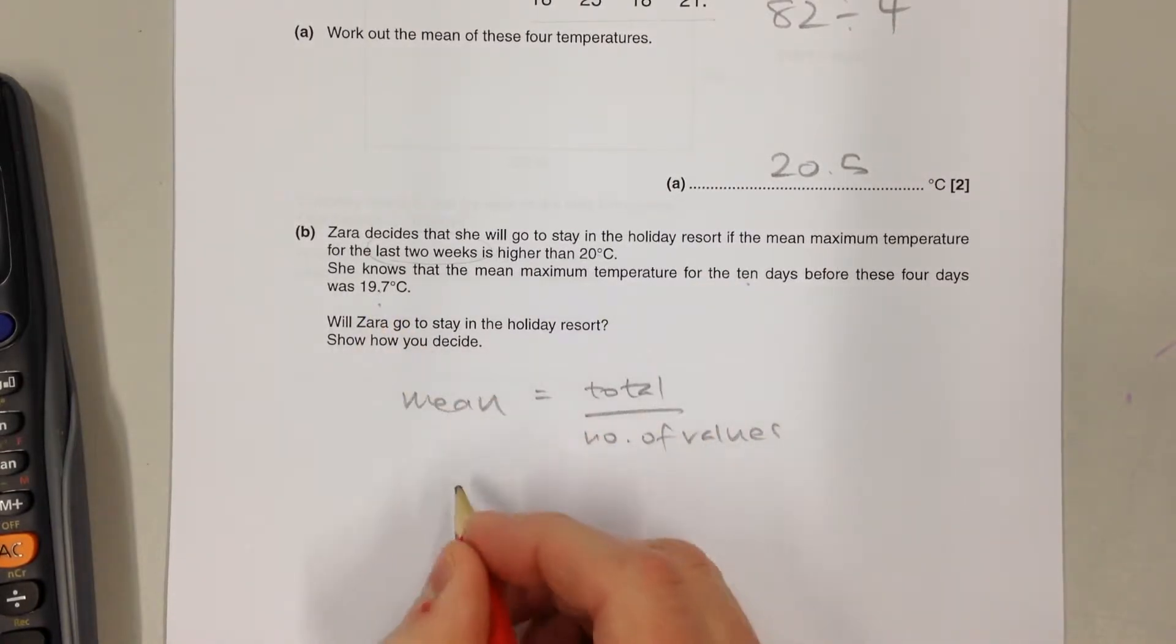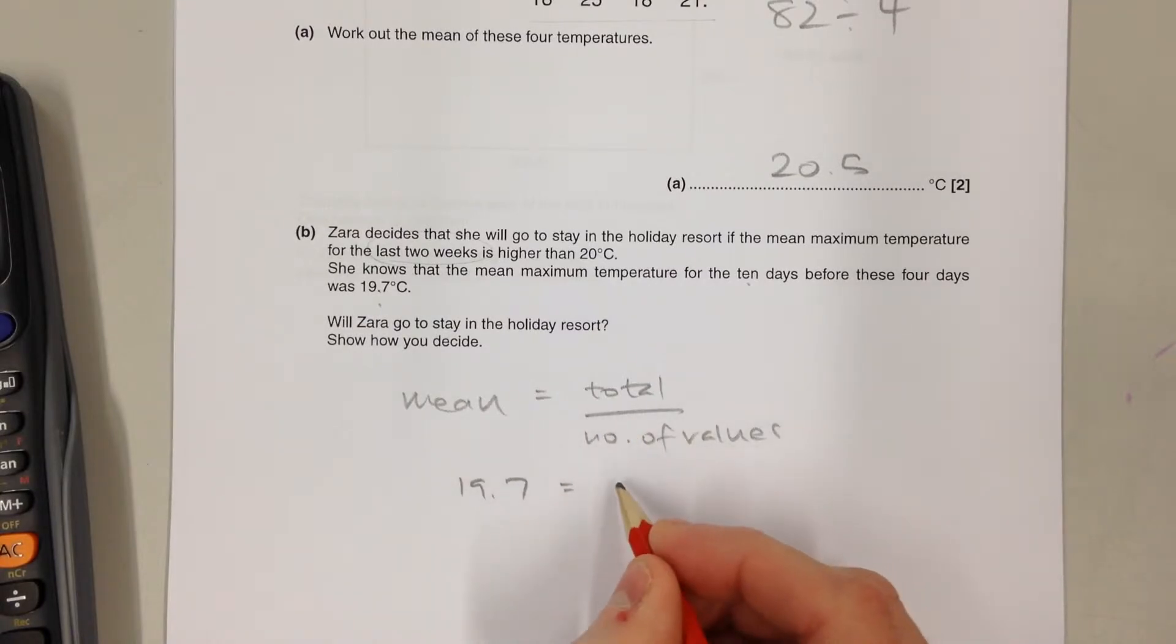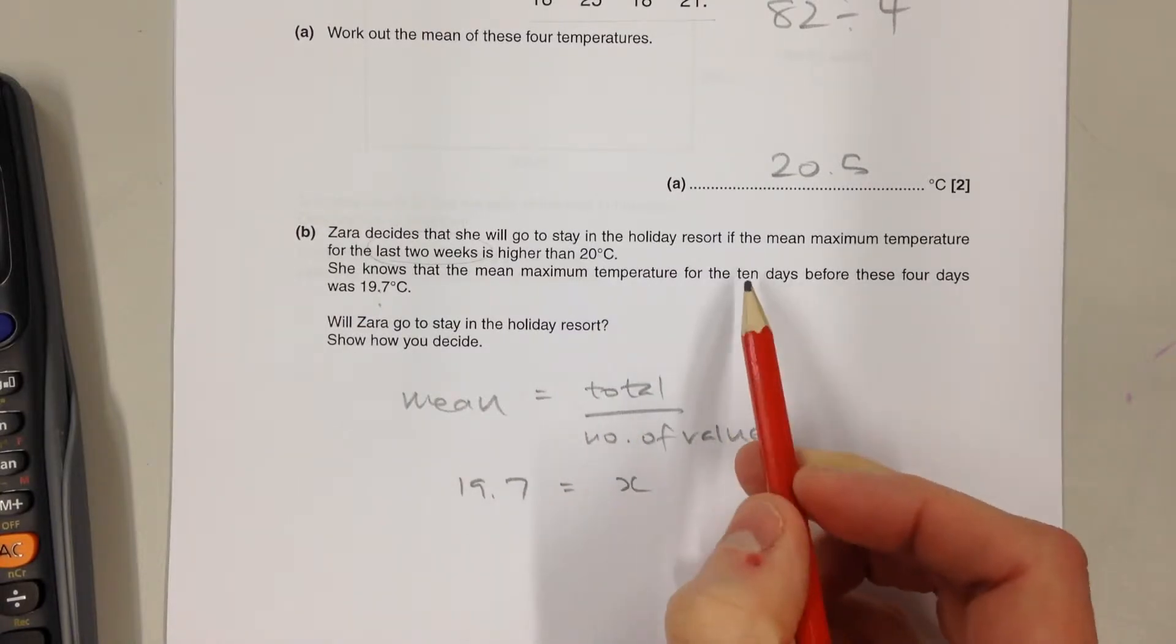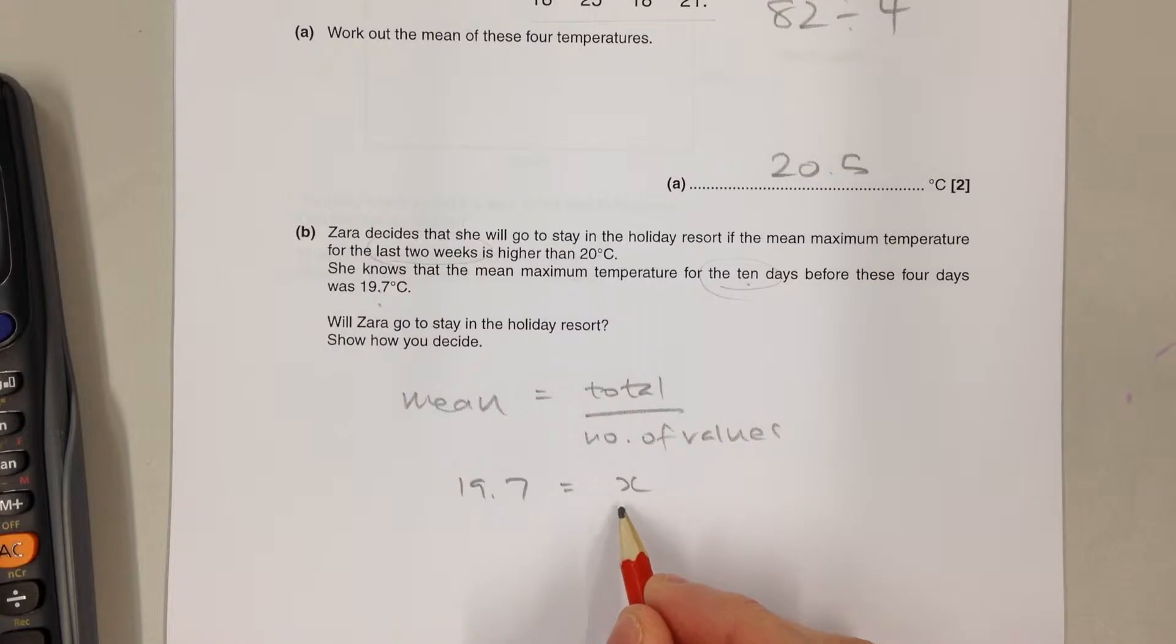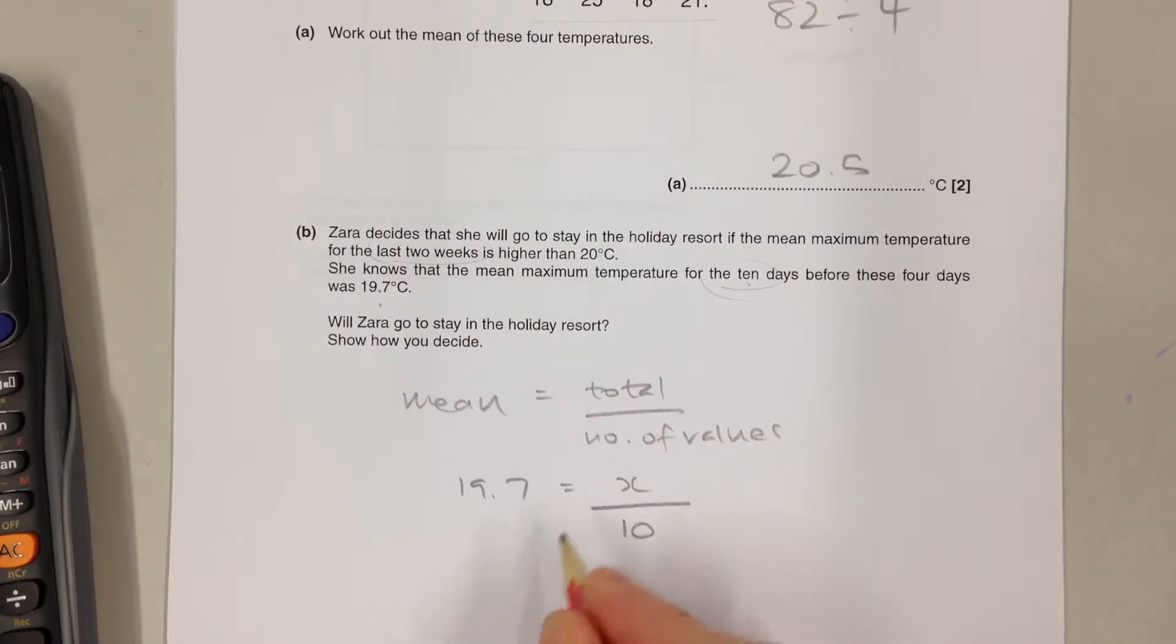We got an answer of 19.7 when we added together the total temperature of these 10 days and divided by 10. So we can work out the total temperature for those 10 days is 197 degrees, because that's the number that when divided by 10 gives us 19.7.